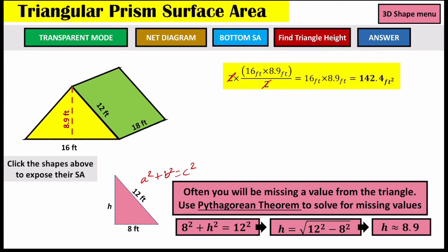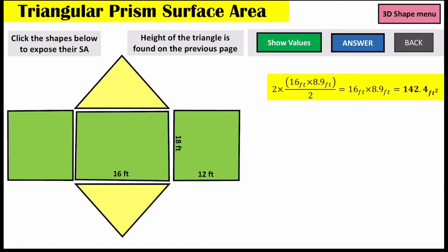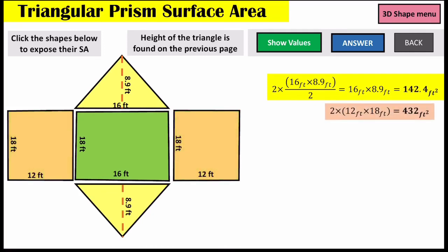We can now find our missing sides. Going back to our net diagram, we have our triangles' surface areas. The two rectangles on the sides are the same — 12 times 18 — and there are two sets of them, giving us 432 feet squared. Then our centerpiece rectangle is 16 by 18, so 16 times 18 equals 288.